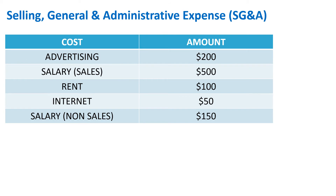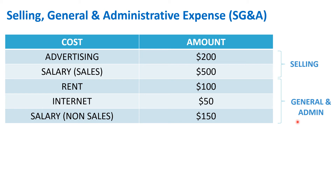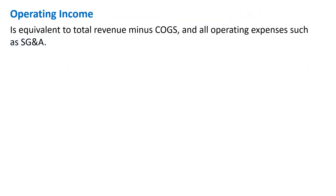Now let's illustrate SG&A expense with some numbers. Tech Store paid $200 in advertising and $500 in salary expense — both fall under selling expense. The store also paid $100 in rent, $50 for internet, and $150 in salary for the non-sales team — these three fall under general and admin expense. Adding all of this together gives a total of $1,000, which is the SG&A. It has two components: selling expense and general and admin expense.